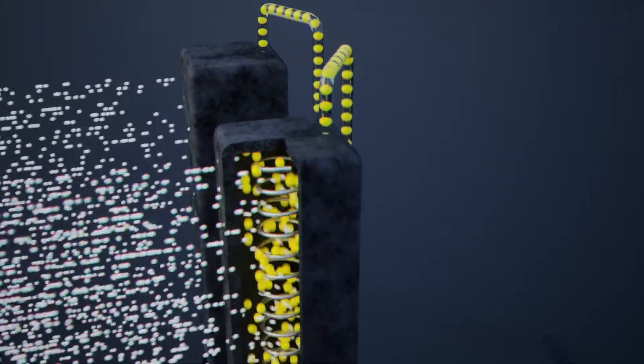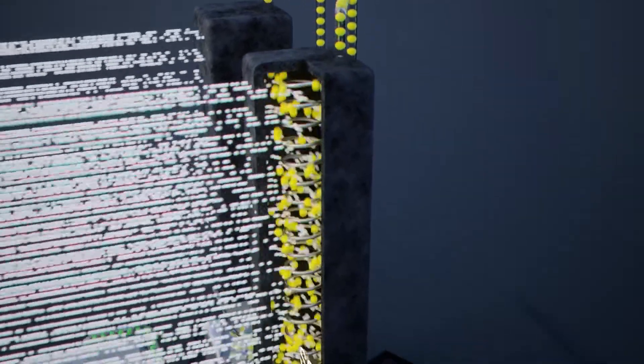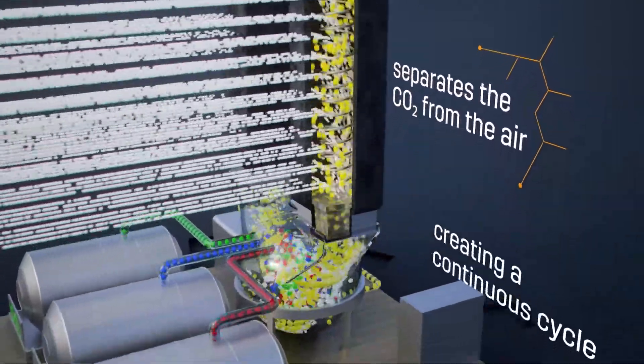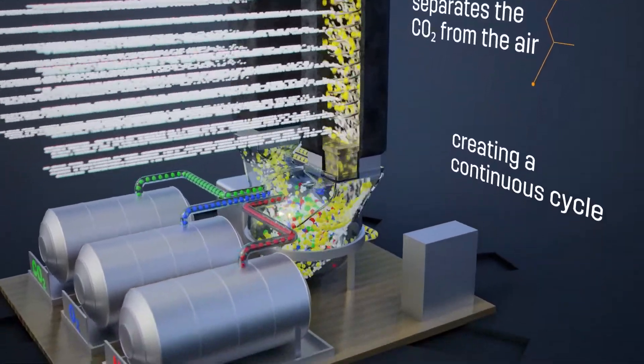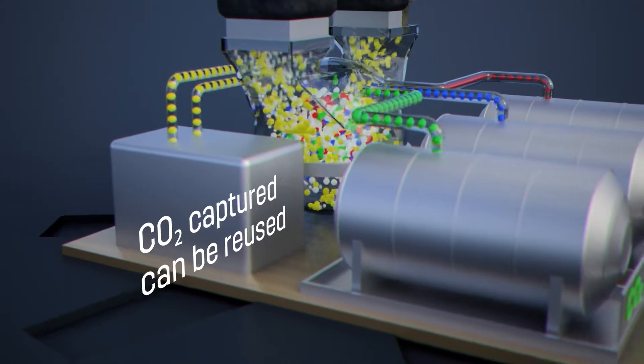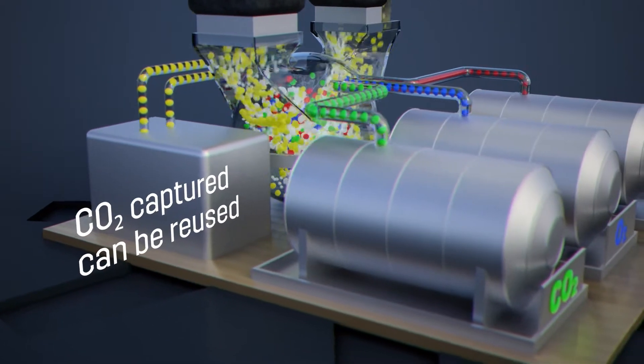Using membrane gas absorption and electrolysis regeneration, the Smart DAC system separates the CO2 from the air, creating a continuous absorption regeneration cycle.